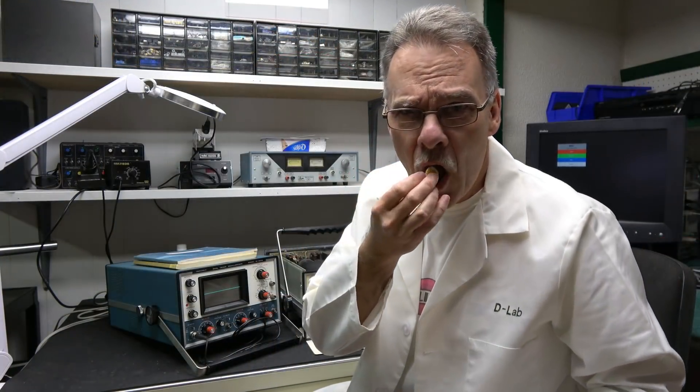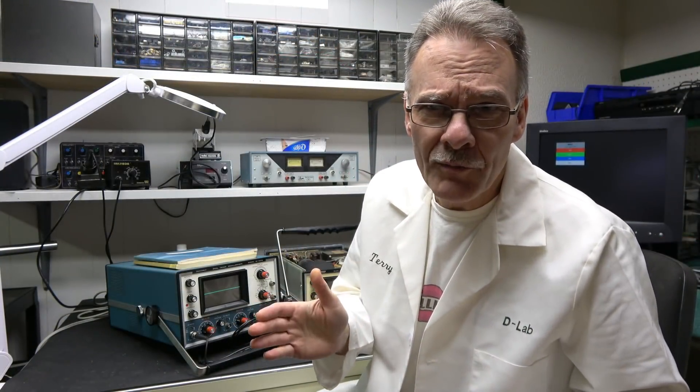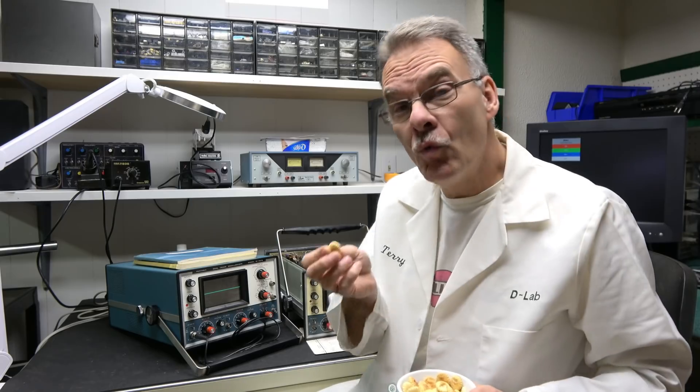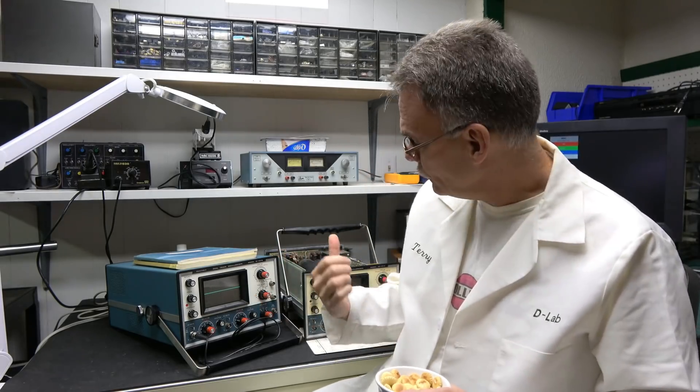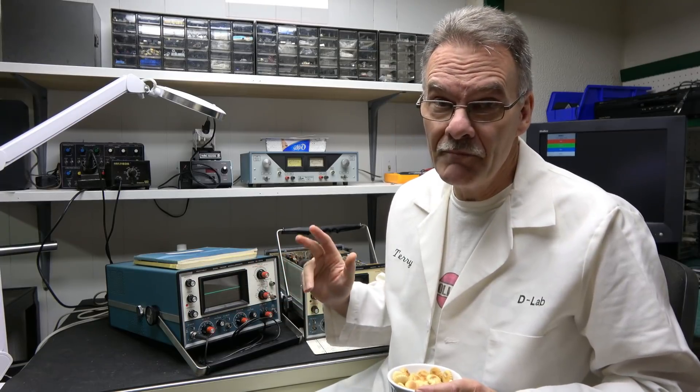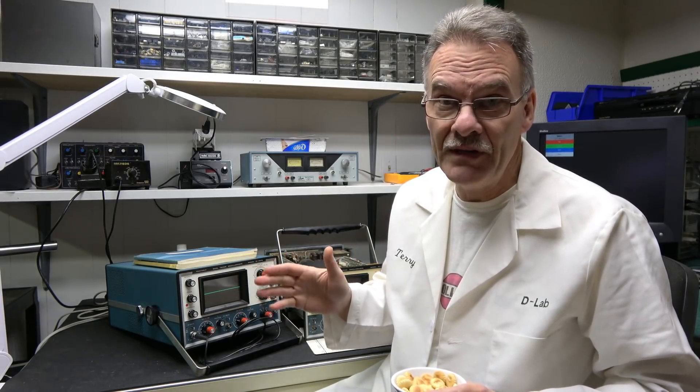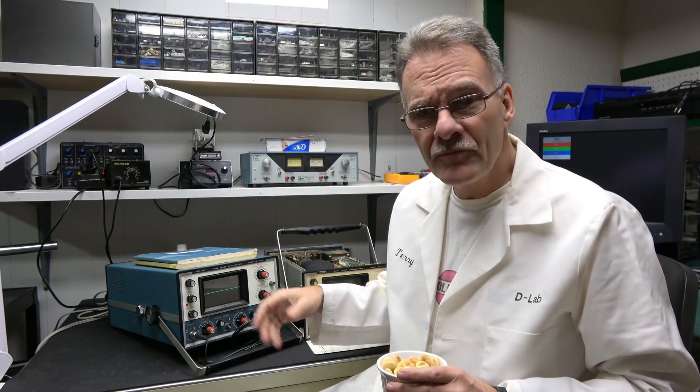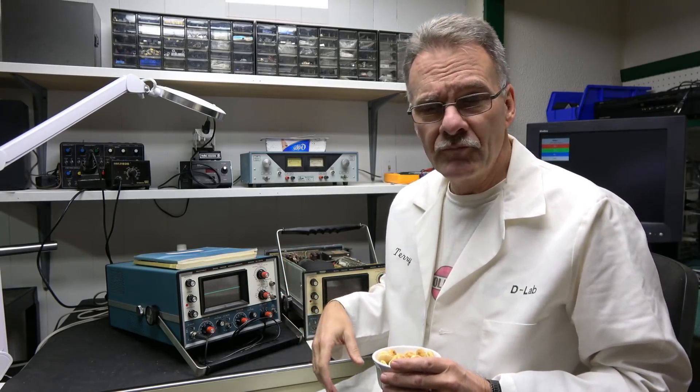Welcome back to Solid State Cinema. What do we have on the bench today? Two Heathkit scopes. Why two? Because one is broken, which is this one, and one works, which is that one. And they both happen to be the same type of Heathkit scopes.